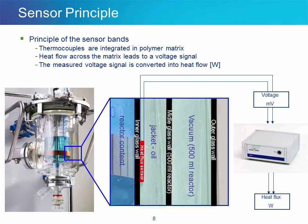These sensors are glued in a polymer matrix and emit a voltage signal when submitted to temperature variations caused by a thermal event in the vessel. The voltage signal is sent to an electronic box which translates the information into heat data.